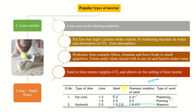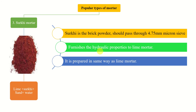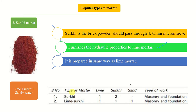The third type is surkhi mortar, where brick powder is used. The brick powder should pass through a 4.75 mm sieve, and it furnishes hydraulic properties to the lime mortar. It is prepared the same way as lime mortar, but surkhi is added additionally. For masonry and foundation, for one part lime, two parts surkhi are used. When sand is also used, it is called lime surkhi mortar.